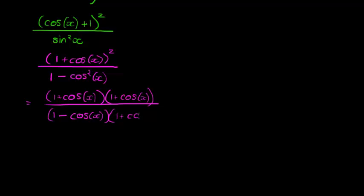Okay, 1 plus cos x. And that is my final step. Here I see that factor can cancel with that factor to leave me in the end with 1 plus cos x over 1 minus cos x. And that's it.